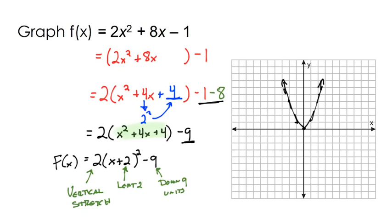So let's figure out what the new vertex is. We go to the left 2 and down 1, 2, 3, 4, 5, 6, 7, 8, 9. So here's my new vertex.